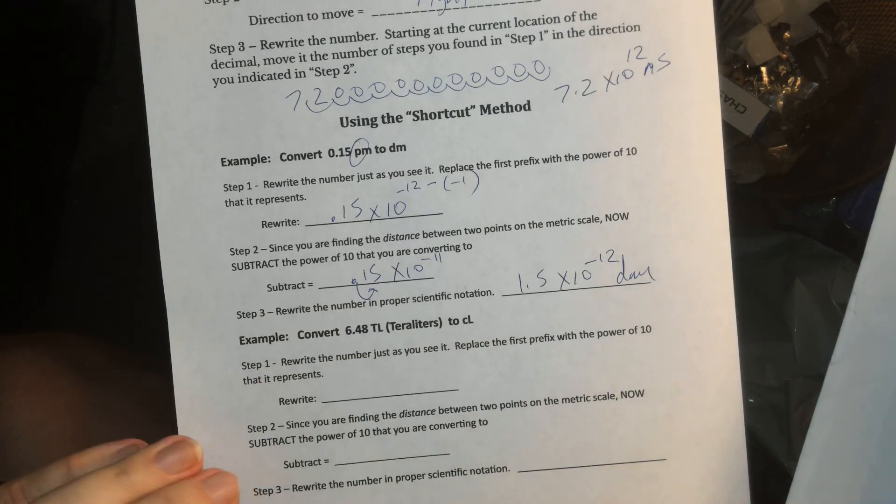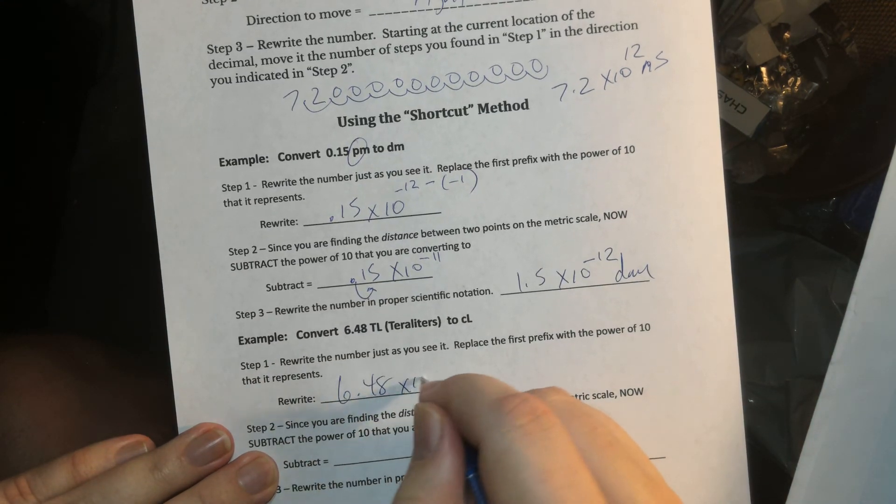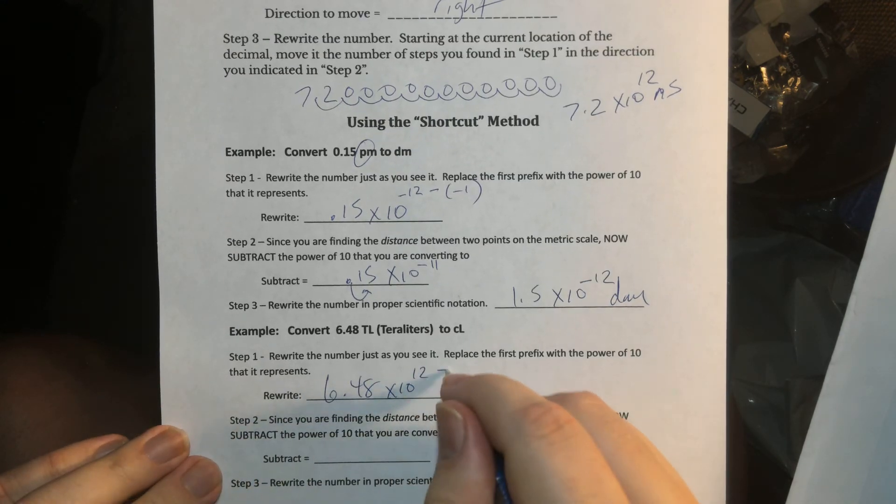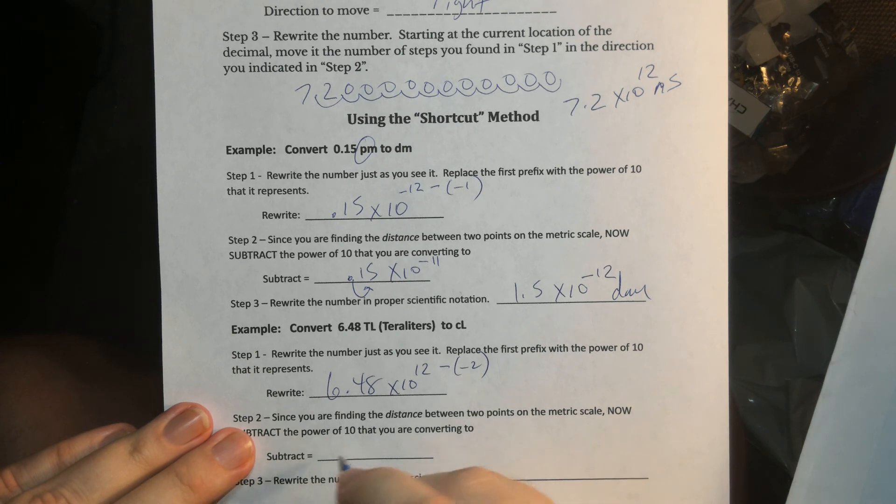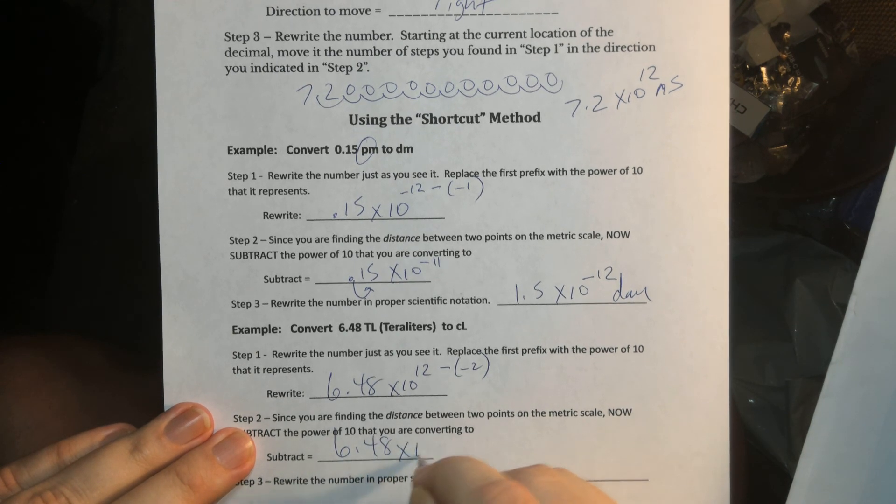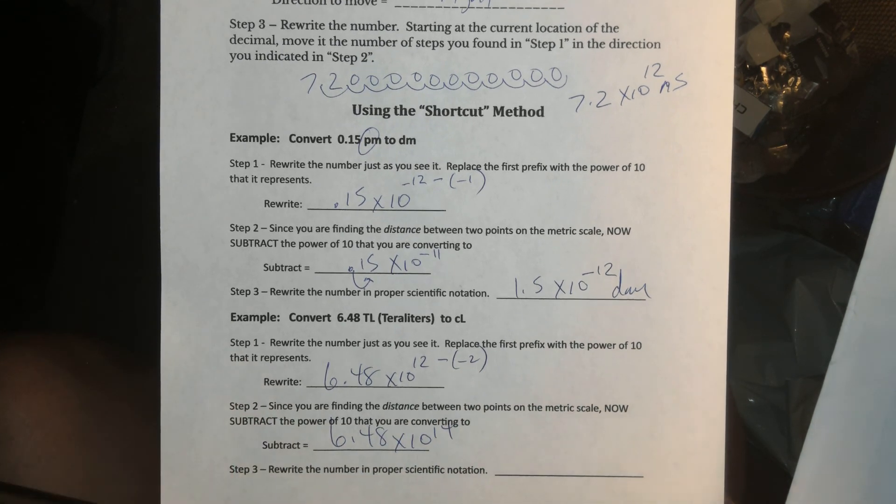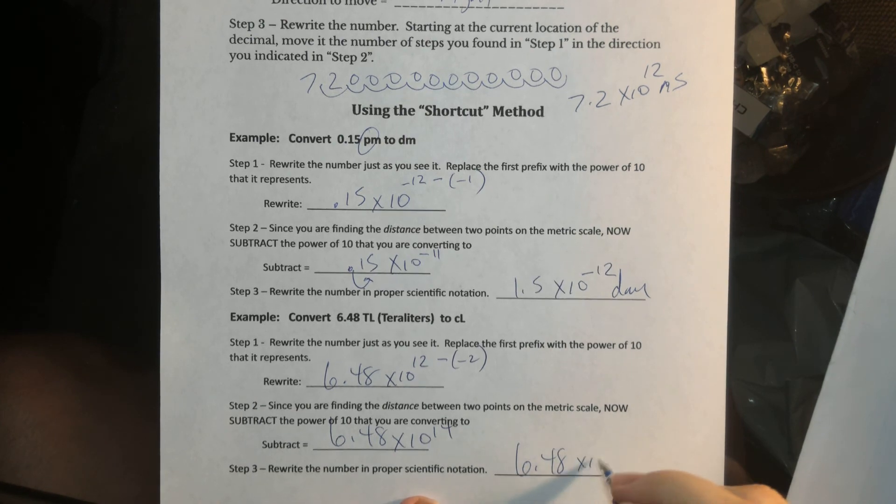All right. And then we have the same thing. 6.48 teraliters. Teralit is 10 to the 12th minus centi, which is minus 2. And that one gives me 6.48 times 10 to the 14th. And that's all I need for this answer.